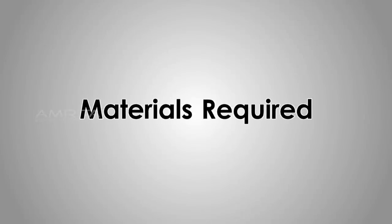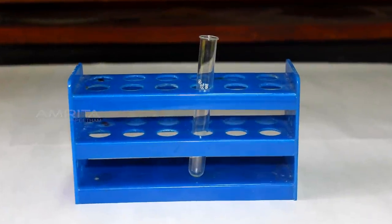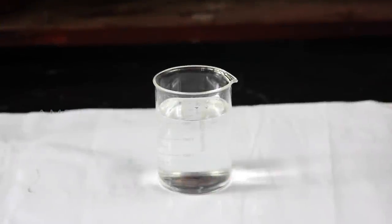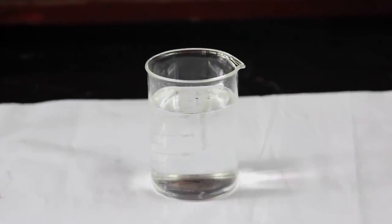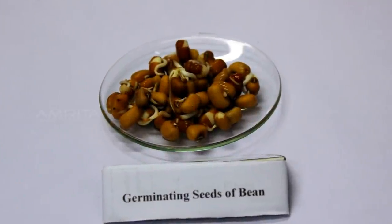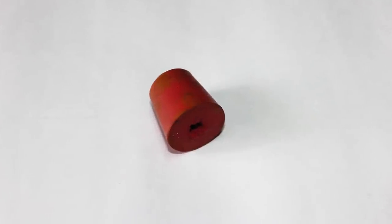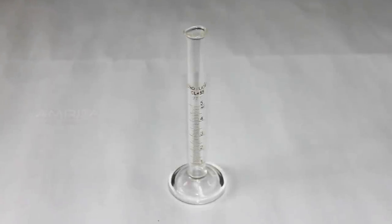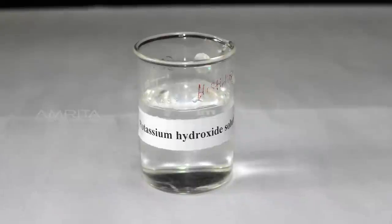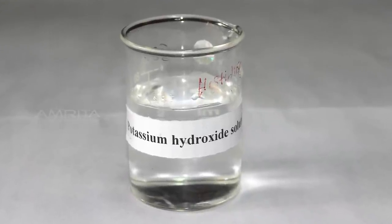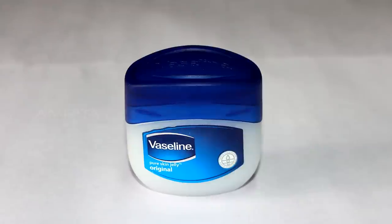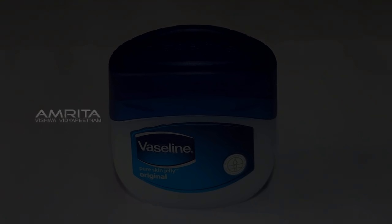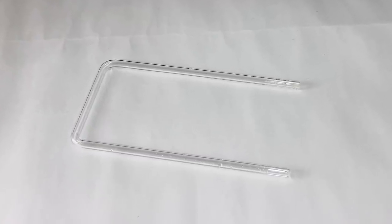To do the experiment we require a test tube, a beaker containing distilled water, germinating seeds of bean, a cork with a hole, a conical flask, measuring cylinder, freshly prepared potassium hydroxide solution, petroleum jelly, thread, and a glass delivery tube with two bends at right angles.